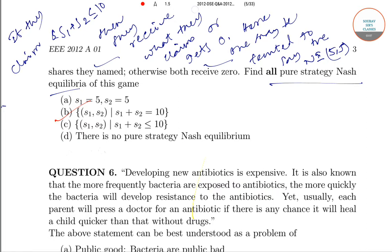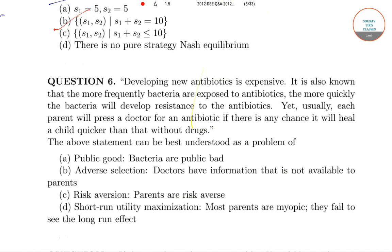Now moving to question number 6, developing new antibiotics is expensive. It is known that more frequently bacteria are exposed to antibiotics, the more frequently or more quickly the bacteria will develop resistance to the antibiotics. Yet usually each parent will press a doctor for an antibiotic if there is a chance that it will heal a child quicker than without a drug. Which of the statement is correct?